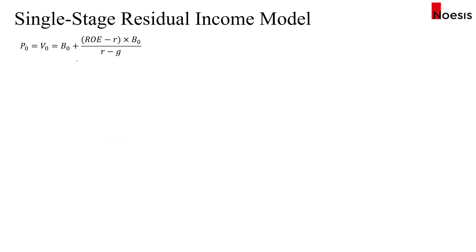If we assume the current market price reflects the intrinsic value and set P0 equal to V0, we can convert this into a multiple by dividing both sides by the current book value per share. This gives us 1 plus (ROE minus R) divided by (R minus G).